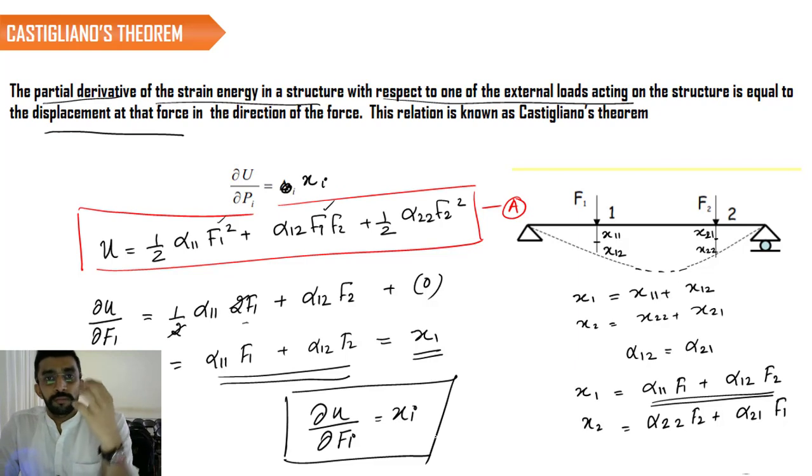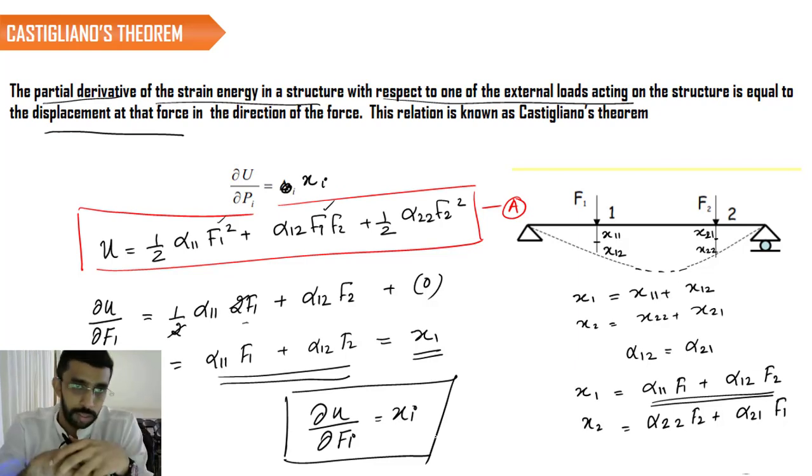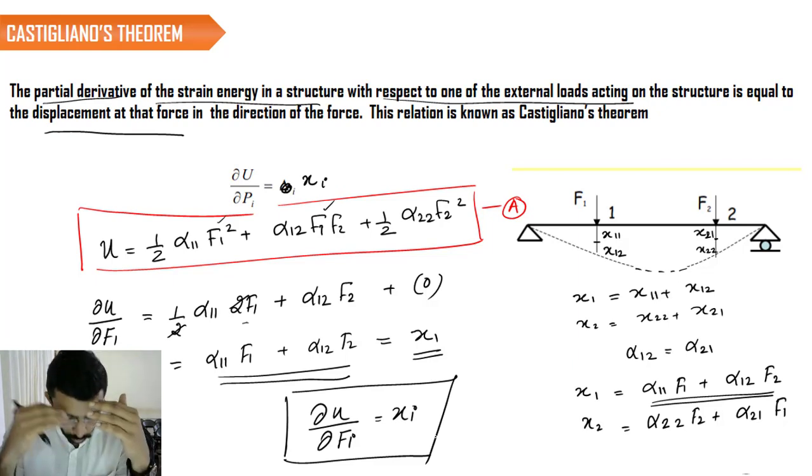How can we solve a problem using this concept? That is the next question. The answer is very simple. First of all, you have to derive a general equation for the strain energy which consists of all the forces in the system. You should not miss out any forces. All the forces should be included in the equation, and using that equation, you differentiate with respect to some particular load to get the deflection at that location.